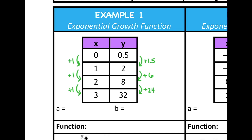So to find how we get from one y value to the next, I'm going to divide the second y value by the first y value. So 2 divided by 0.5 and I get 4. And what happens if I do that with the next two y values? 8 divided by 2 equals 4. And if I do that with the last two y values, 32 divided by 8 equals 4.